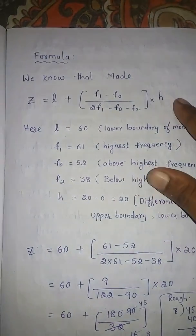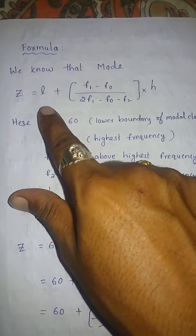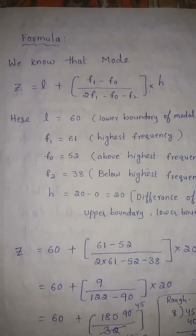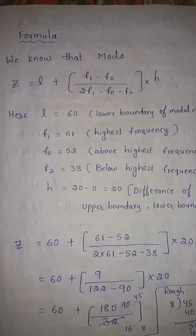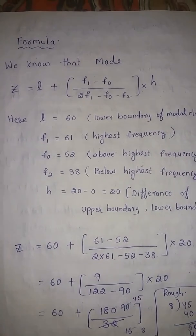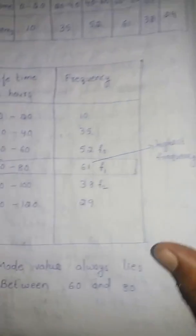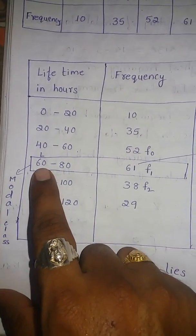We know the formula. Mode is equal to Z equals L plus F1 minus F0 by 2 times F1 minus F0 minus F2 into h, where L is nothing but lower boundary of the modal class.